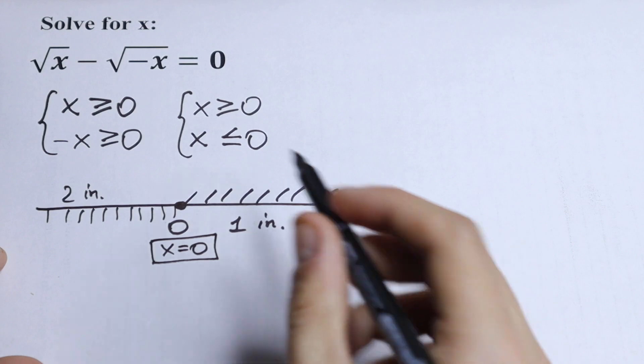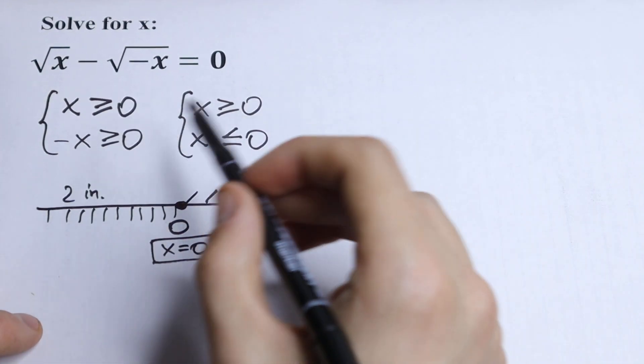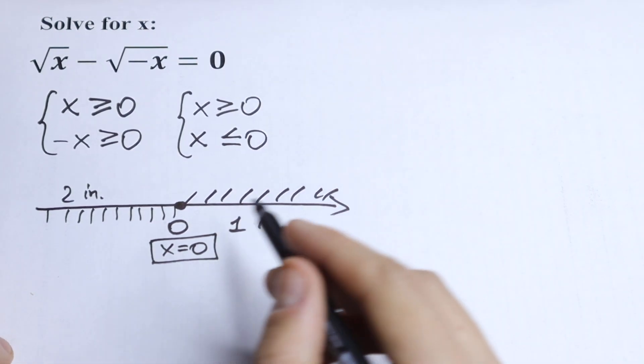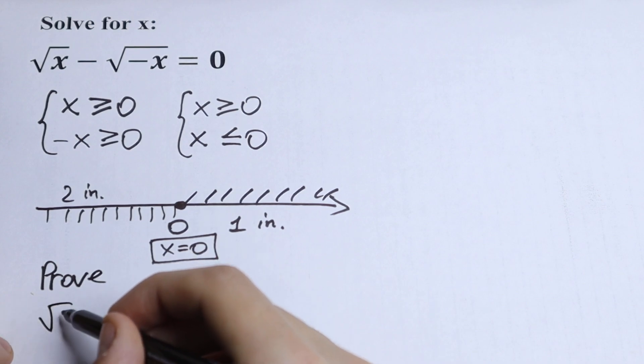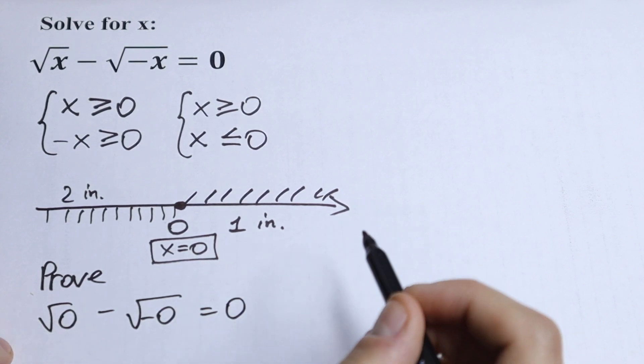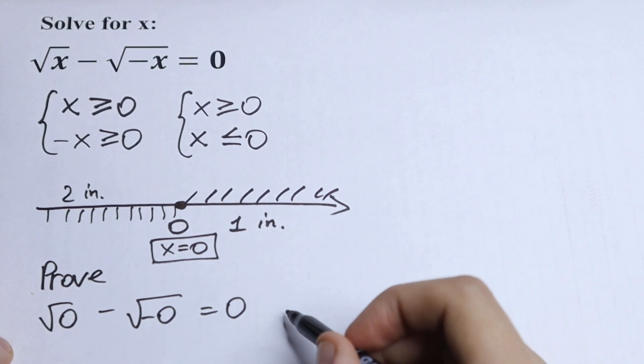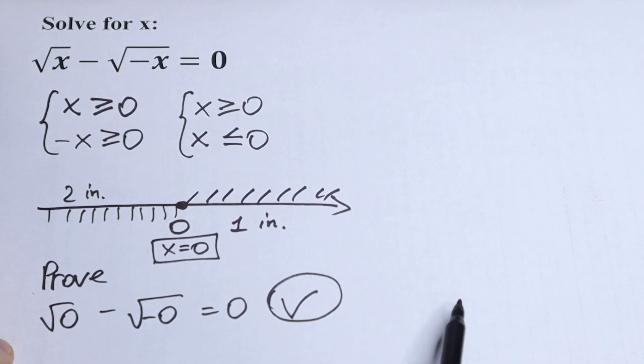So take a look right here. Let's try to put 0 right here and try to check our root using this inequality method. We will have square root of 0 minus square root of minus 0 equal to 0. Of course this works. Because we will have 0 minus 0 equal to 0.